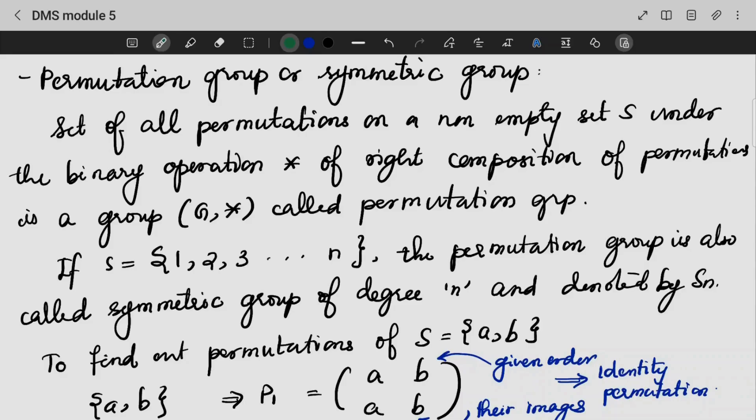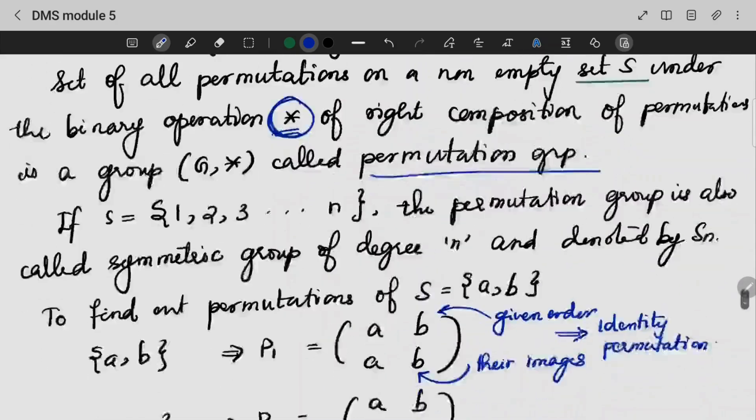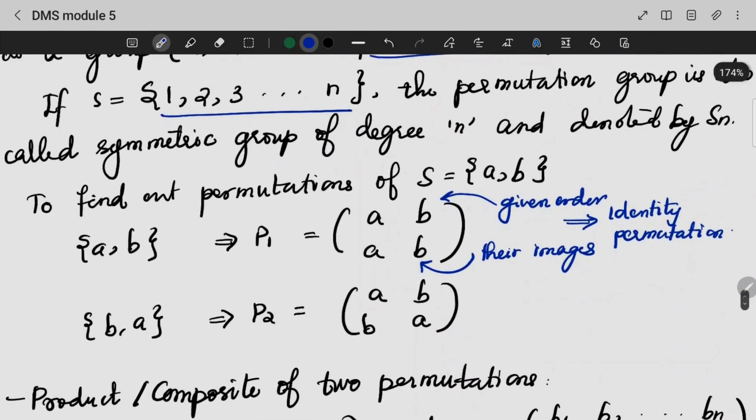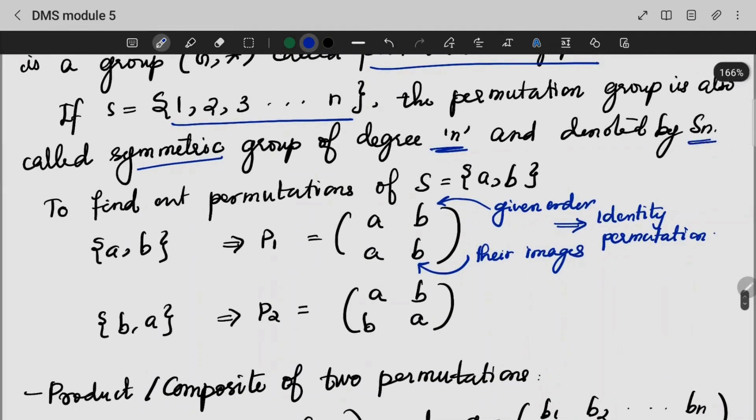We are going to do the permutation group, the symmetric group. A list of all the permutations on the set S with a binary operation star is called a permutation group. Let me show you a set S, 1 up to N. That set is called a symmetric group of degree N, and it will be denoted by Sn.